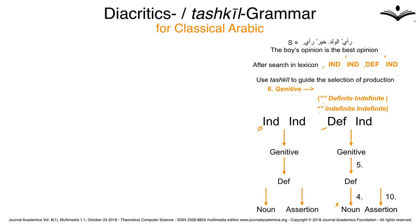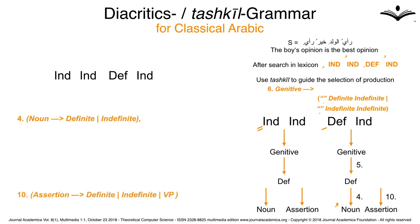If we omit all use of tashkil, because productions four and ten may classify words as either noun or assertion, we get an additional 16 possibilities on top of the already discussed ones, which is an important drawback.